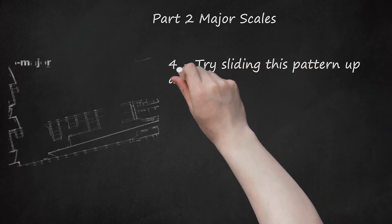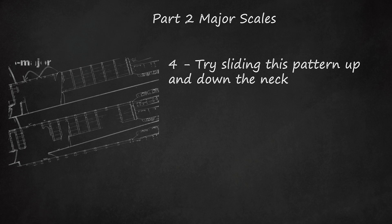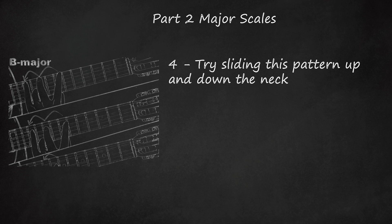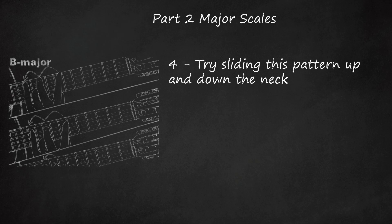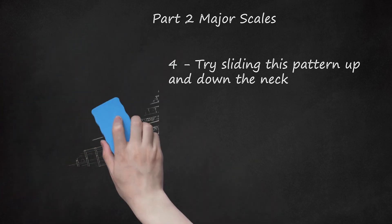Try sliding this pattern up and down the neck. As long as you're starting on the low E or A string, the major scale fingering pattern can be played anywhere on the neck — just shift all the notes up or down by the same number of frets to play a different major scale. For example, to play a B major scale, move up to the 7th fret of the low E string and use the same fingering pattern: B (fret 7), C-sharp (fret 9), D-sharp (fret 11) on the E string; E (fret 7), F-sharp (fret 9), G-sharp (fret 11) on the A string; A-sharp (fret 8), B (fret 9) on the D string.